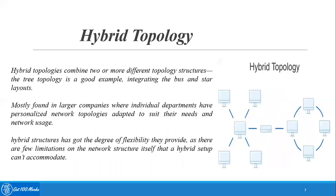Hybrid topology combines two or more different topology structures. Tree topology is a good example, integrating bus and star topologies. Hybrid topologies are mostly found in larger companies where individual departments have personalized network topologies adapted to their needs. Hybrid structures offer a high degree of flexibility, with few limitations on the network structure, making it the most flexible among all topologies. That's why most companies prefer hybrid topology.